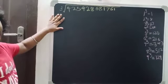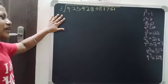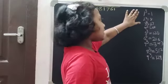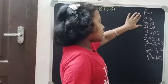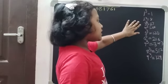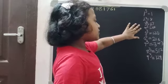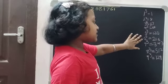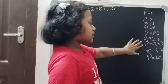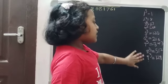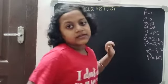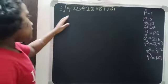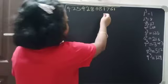Before going to the sum, you have to understand a concept: 1 cube is 1, 2 cube is 8, 3 cube is 27, 4 cube is 64, 5 cube is 125, 6 cube is 216, 7 cube is 343, 8 cube is 512, 9 cube is 729. This will help us.